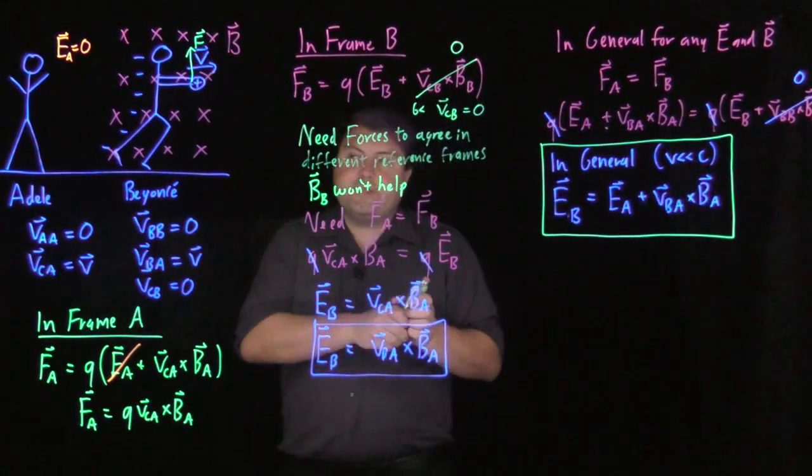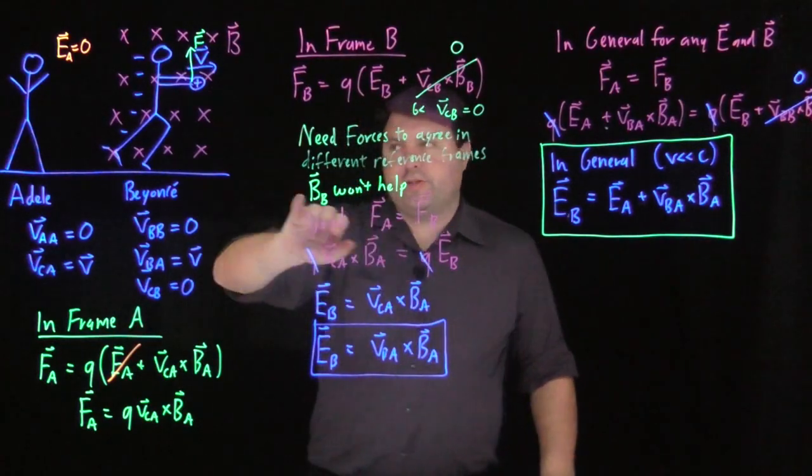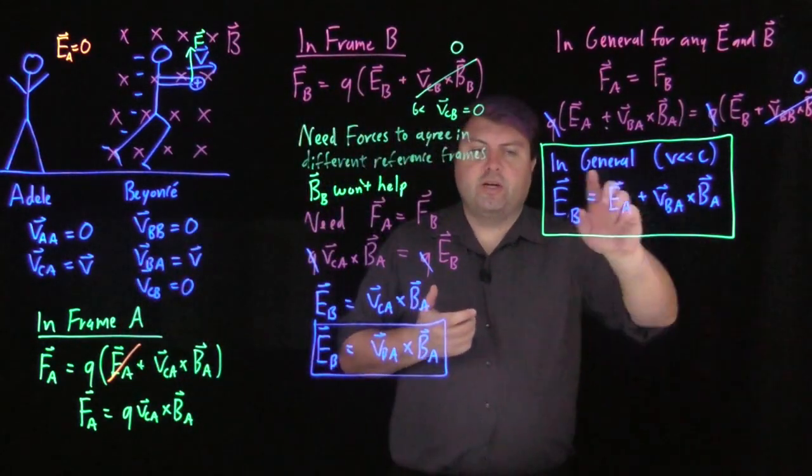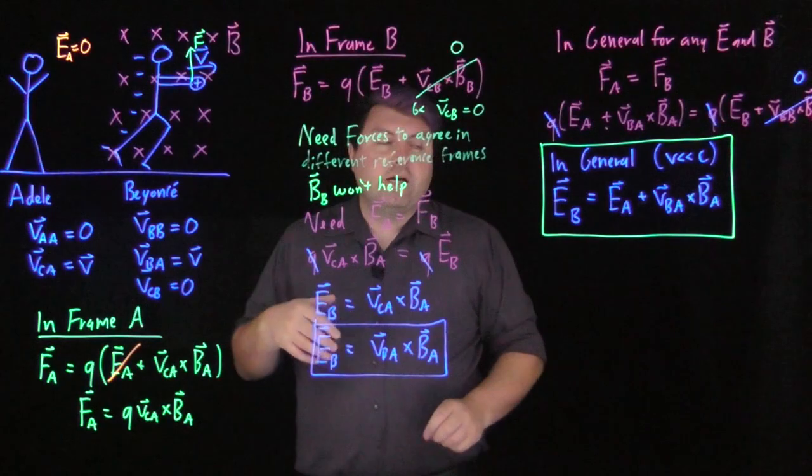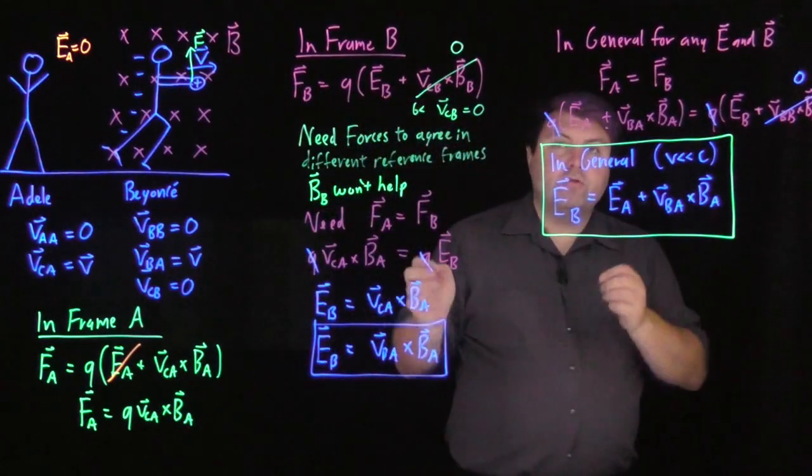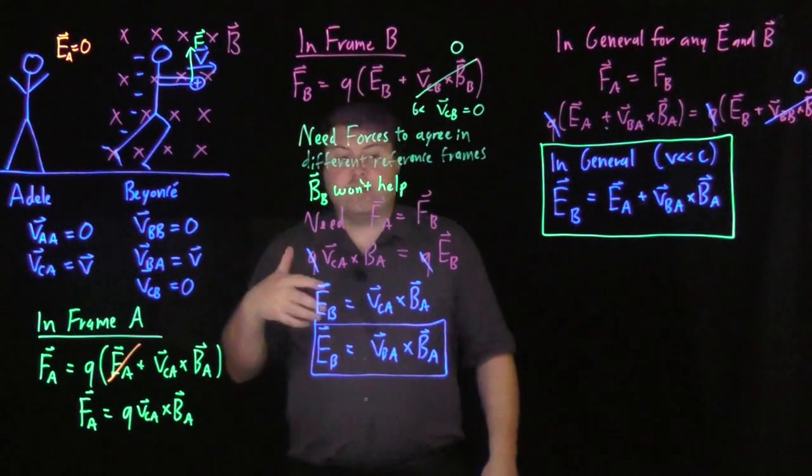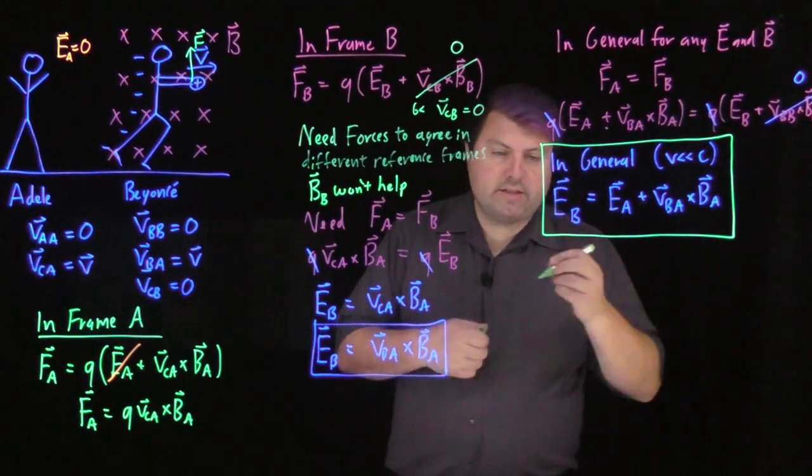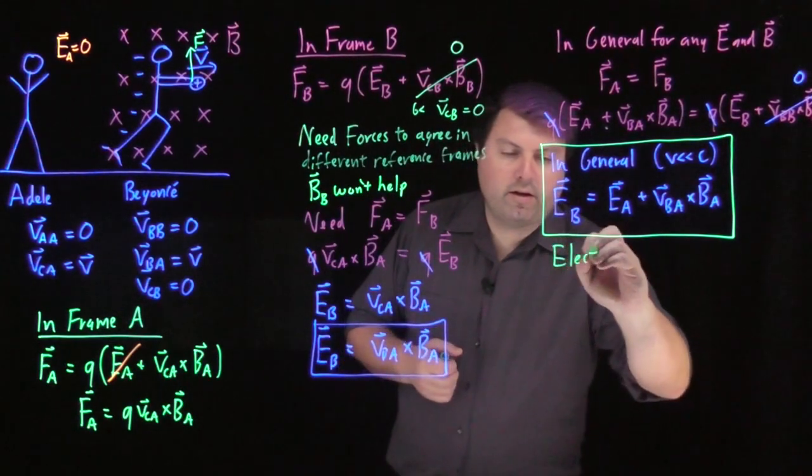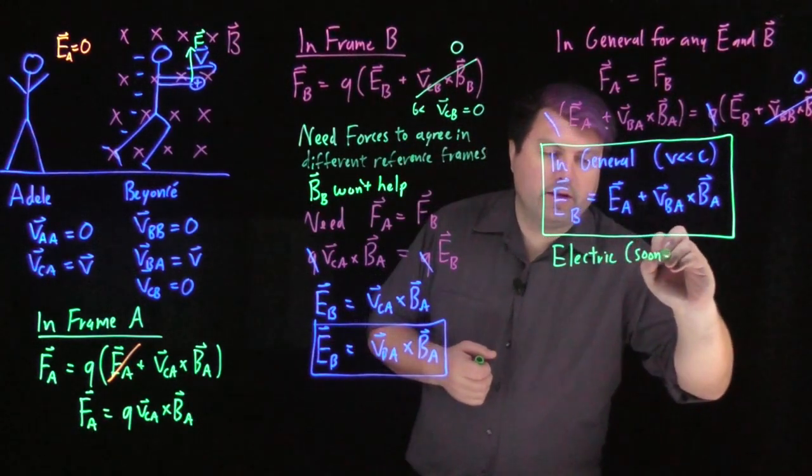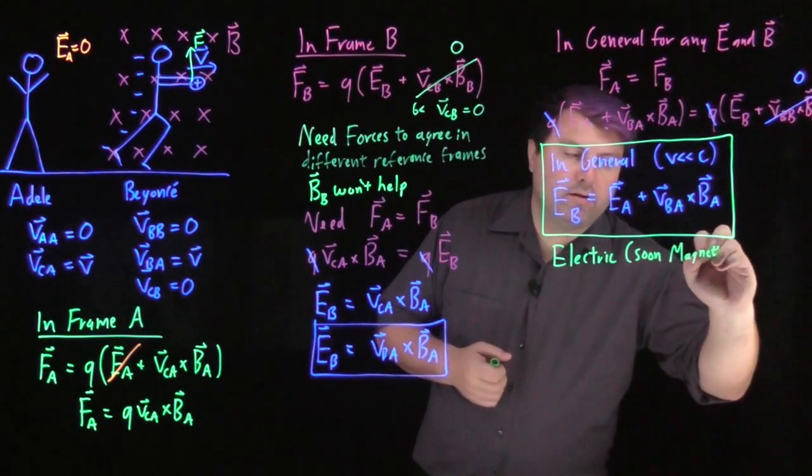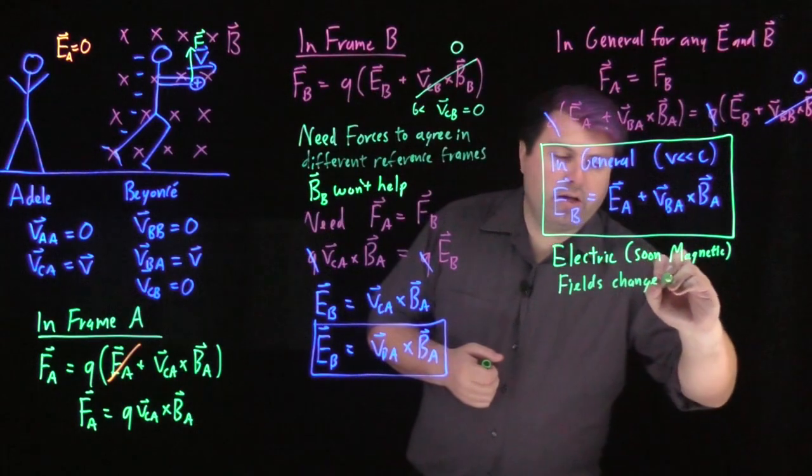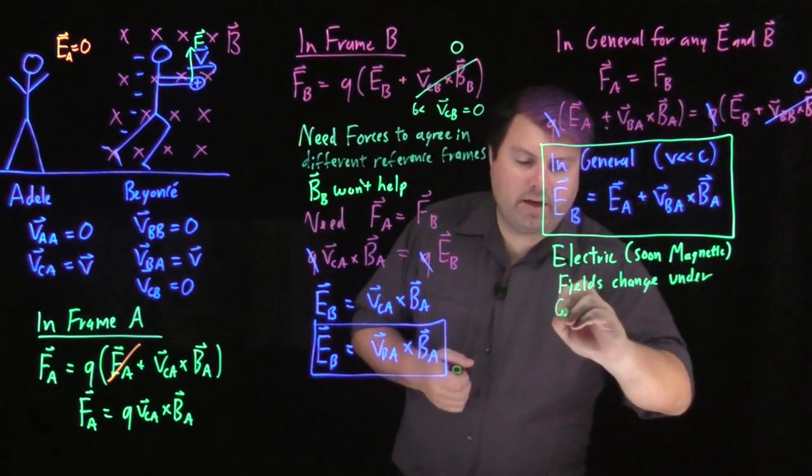This is weird. What this is saying is that we agree that the forces can't change no matter whether we change reference frames. In order for the forces not to change, the electric field needs to be one of the quantities that can change with change of reference frame. Up until now, the things that could change with change of reference frame are velocity and position. So what this is saying is that electric and soon magnetic fields change under Galilean transformations.